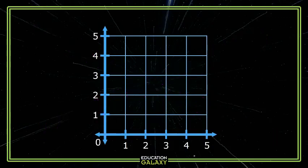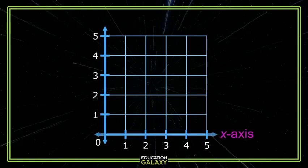And different pieces of this plane have names. This number line along the bottom, the one that's horizontal, that's called the x-axis. It's usually labeled with an x. And then its friend, the up and down one, is the y-axis, and it's usually labeled with a y.